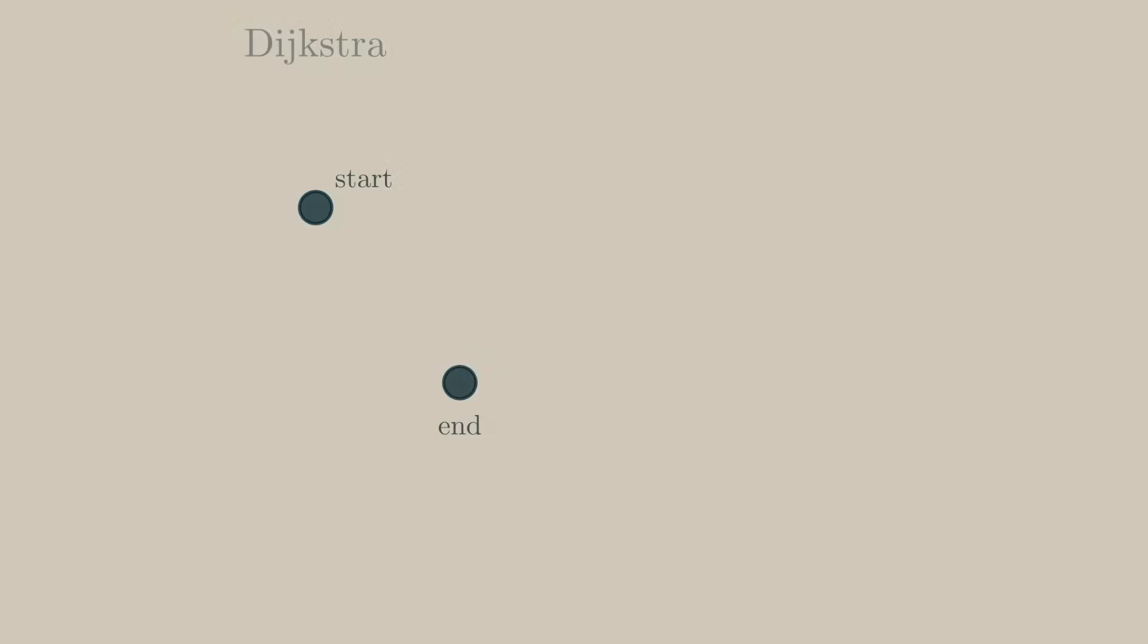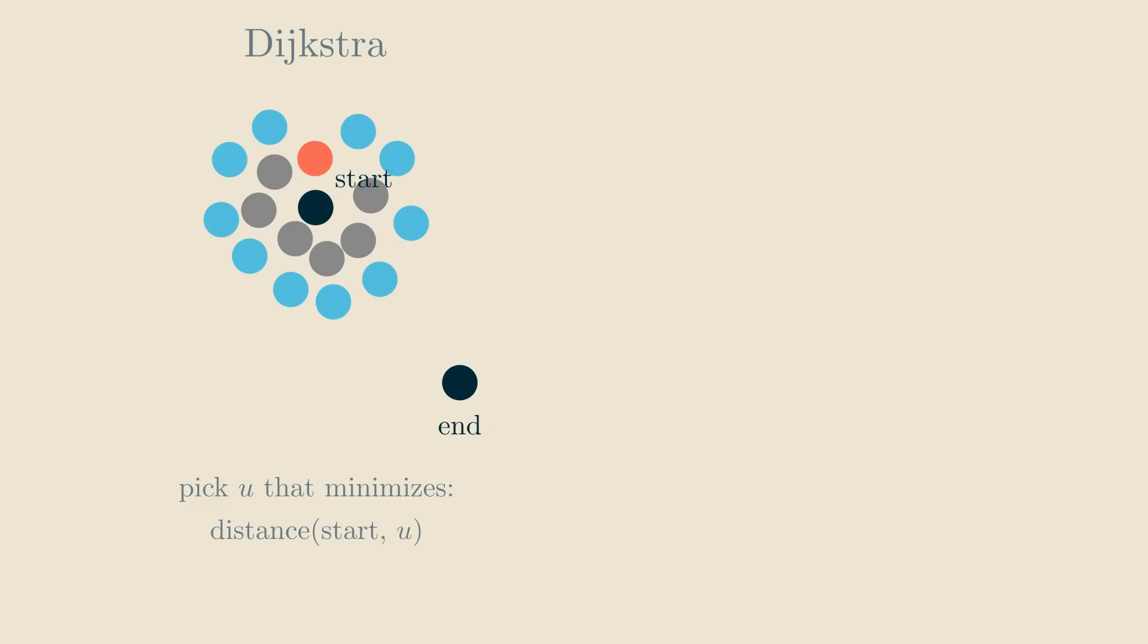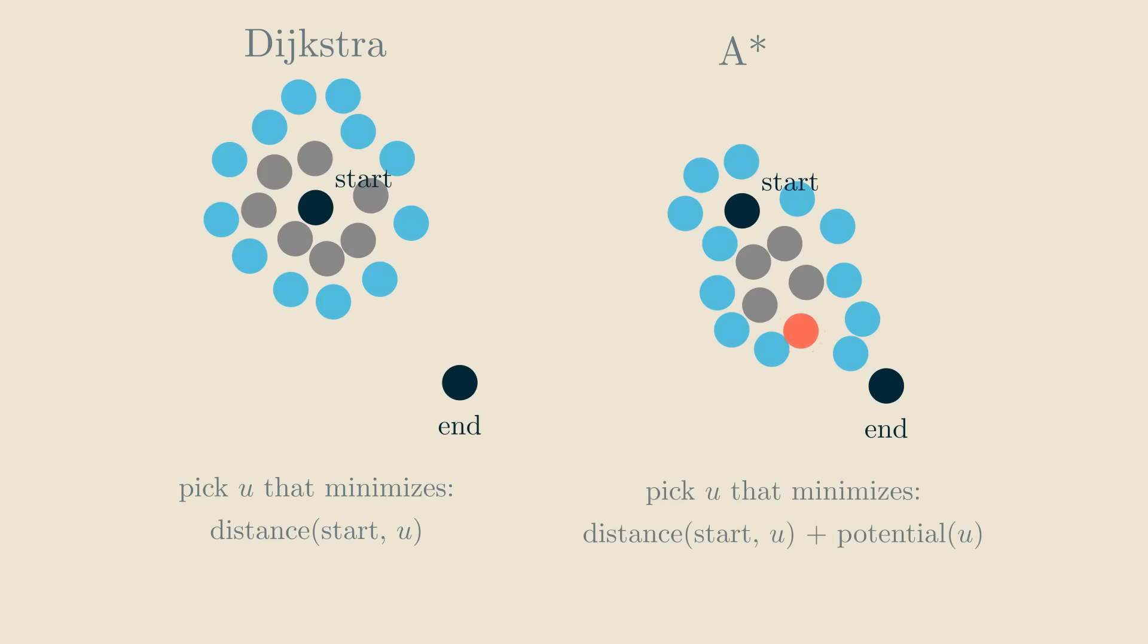And if you understand Dijkstra's algorithm, there's a very simple reason why this code makes sense. At every step of Dijkstra's algorithm, we have a boundary of explored nodes. We look at the node from the boundary that's currently the closest to the starting node and recompute the boundary. In A-star, we also have a boundary of explored nodes, but we always select the node that minimizes the distance to the start plus the potential. Remember, the potential is an estimate on the distance from the node to the end. So when you think about it, the A-star rule is trying to select the node that looks like it lies on the shortest path from the start to the end. And that's the usual intuition behind A-star.